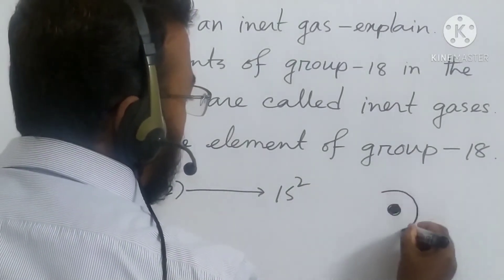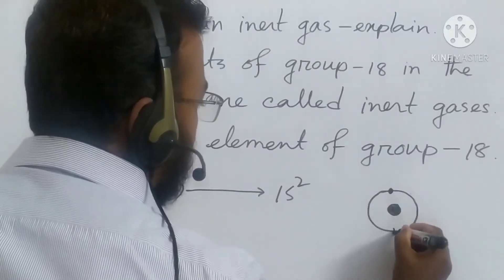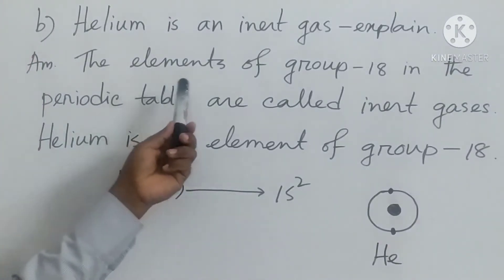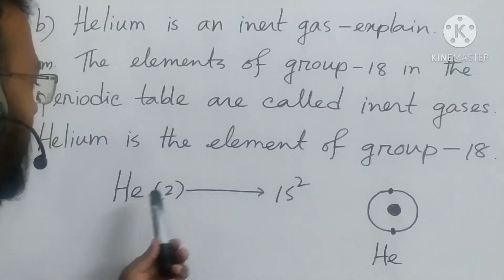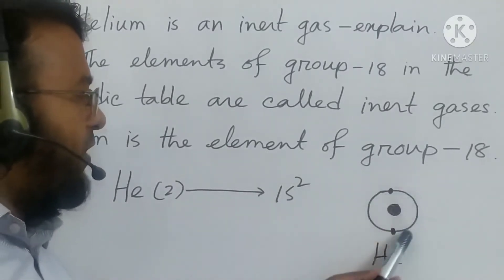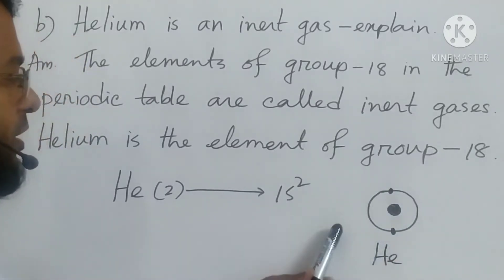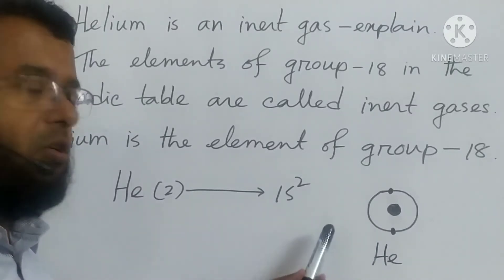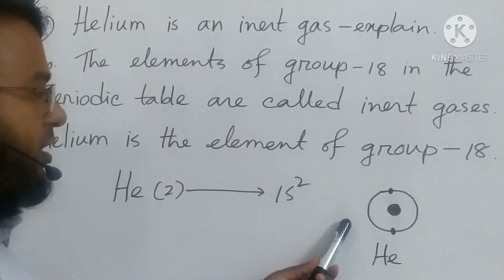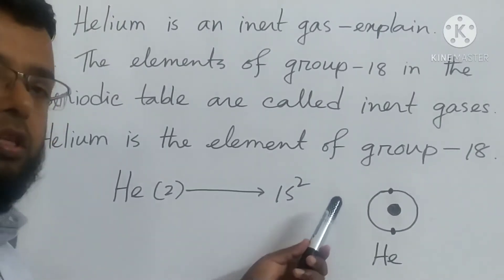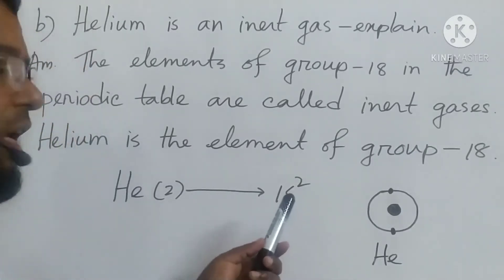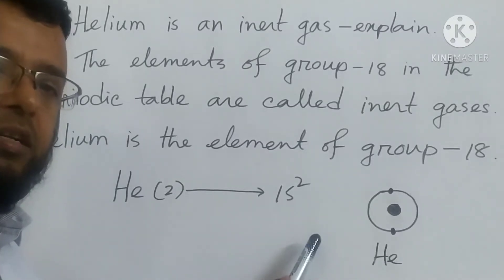The first energy level of helium is fulfilled by electrons. The outermost energy level of inert gases is fulfilled by electrons. For this reason, the inert gases don't donate, share, or accept electrons with another atom to form compounds. Helium remains inactive to form bonds or take part in chemical reactions. For this reason, helium is called an inert gas.